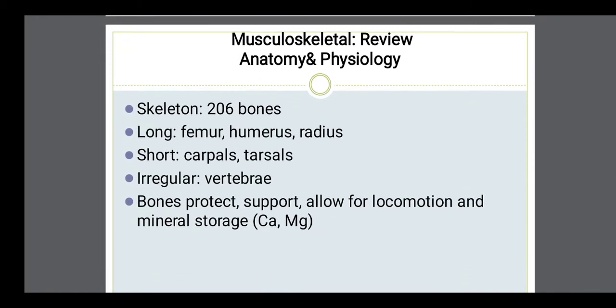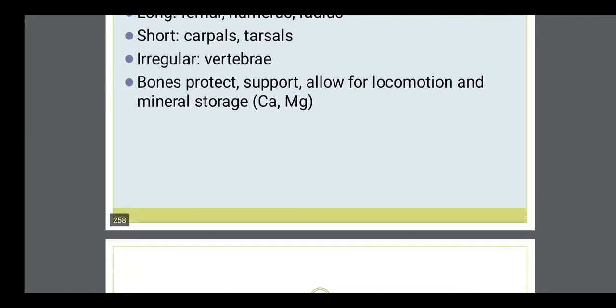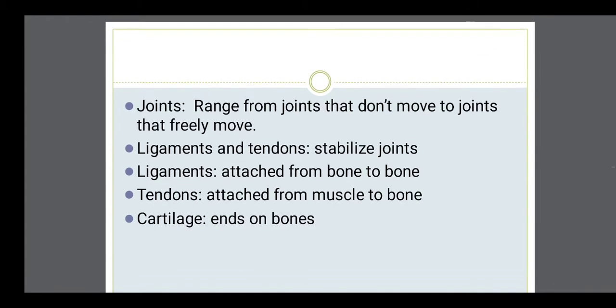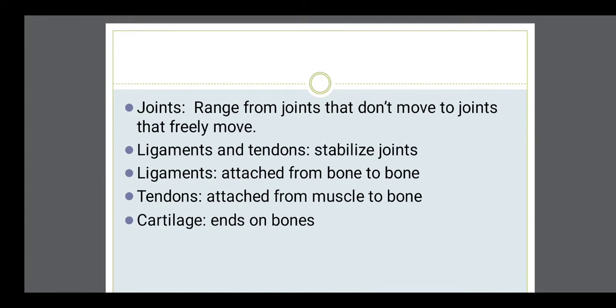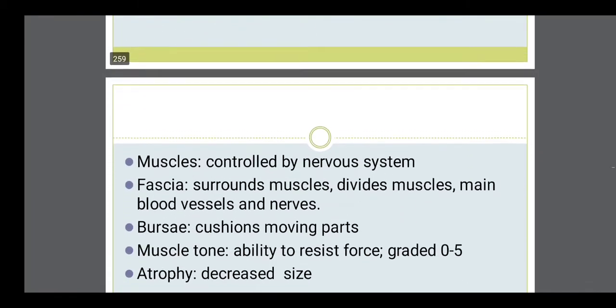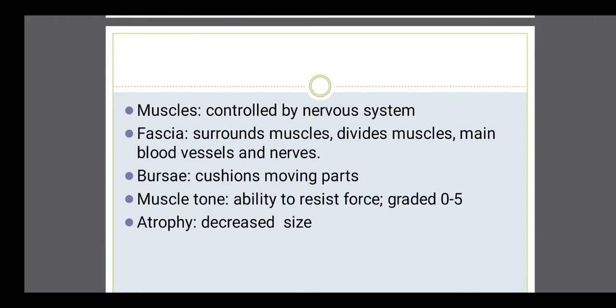Now I will start about the musculoskeletal system examination. First, I will review the related anatomy and physiology. The skeleton consists of 206 bones. Long bones are the femur, humerus, and radius; short bones are carpal and tarsal; irregular bones are the vertebrae. The joints help in movement — there are freely movable joints and joints which provide very little movement. Muscles are attached to the bones for locomotion and are controlled by the nervous system.